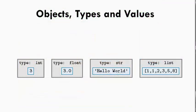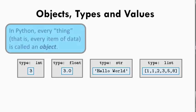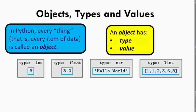In a pure object-oriented language like Python, every thing, that is every item of data, is called an object. Every object has a type and a value. For example, the leftmost box shows the whole number 3, that is, an object whose type is int and whose value is 3.